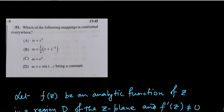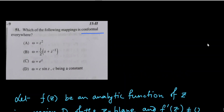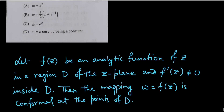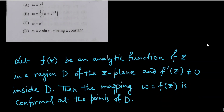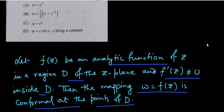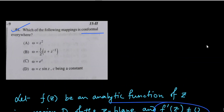The next question asks: which of the following mappings is conformal everywhere? The concept is: if f(z) is analytic in a region D and f'(z) ≠ 0 inside D, then w = f(z) is conformal at all points of D. We need to find a function whose derivative never vanishes. The function w = e^z has derivative e^z, which never equals zero, so w = e^z is conformal everywhere. This is clearly the correct answer.